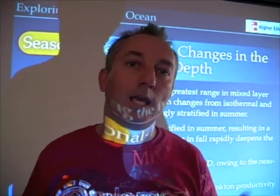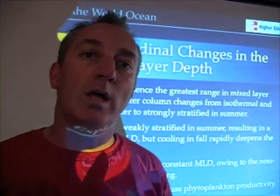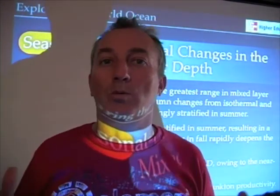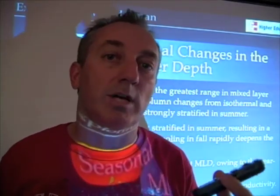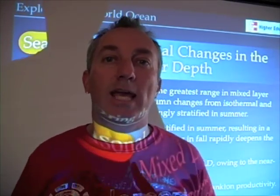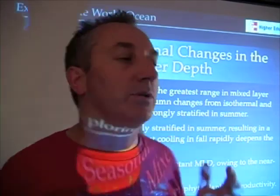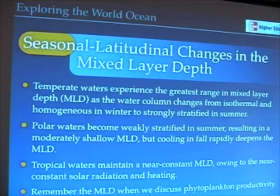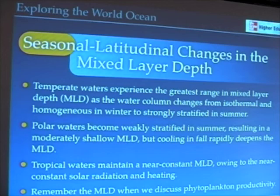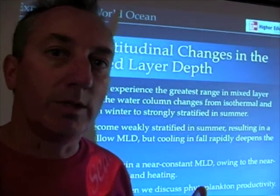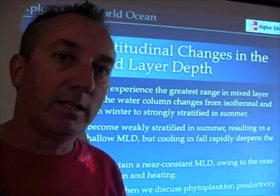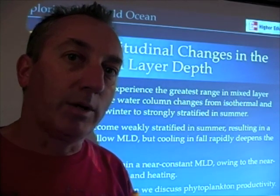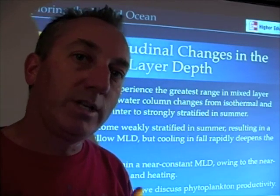We'll understand why tropical waters are clear and blue when we study productivity. In our temperate ocean here in California and in other temperate oceans, you generally have a greening of the waters in spring and summer, and the clearest waters — best for diving — in fall. These changes in mixed layer depth, the seasonal cycle, and latitude all work together to determine the physical structure of the ocean and ultimately its productivity, its ability to produce oxygen, and how it keeps us warm.